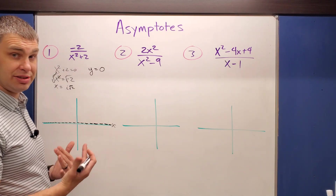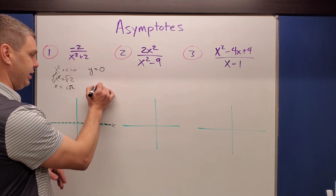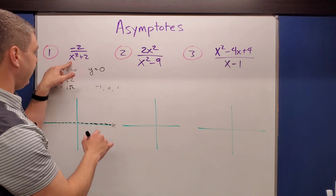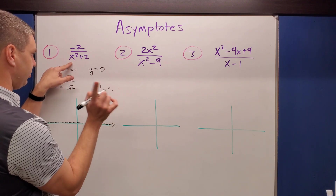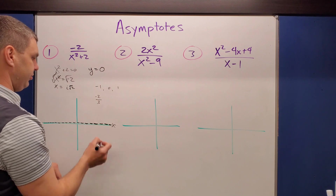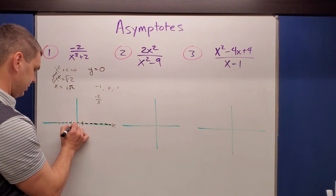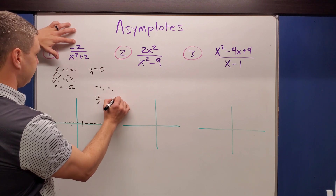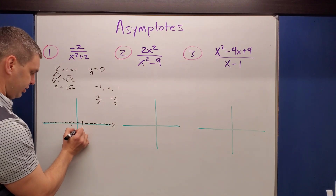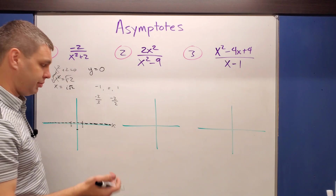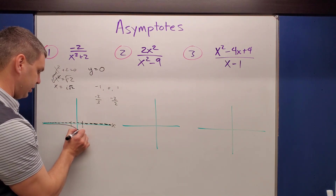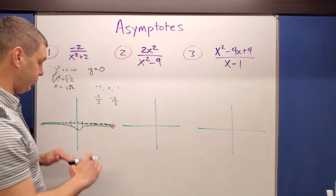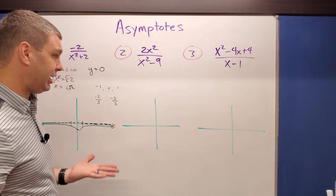To figure out which side of the asymptote the curve is on, we test points near zero. Plugging in x equals negative one: negative two over (1 + 2) gives negative two-thirds, slightly below zero. Plugging in x equals zero: negative two over two equals negative one. The curve dips below y equals zero, then approaches that line from below but never crosses it. That's the graph of this function.